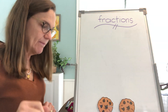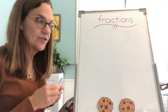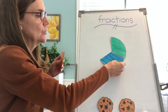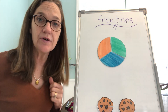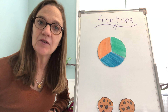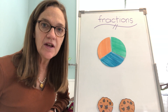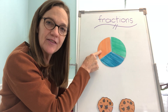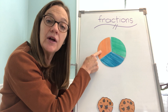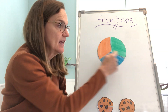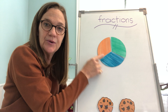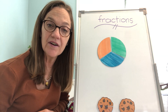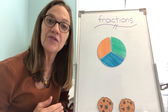Yesterday, we talked about thirds. Do you remember? One, two, three pieces — three equal pieces. That's what makes something thirds. Do you remember that we also talked about how many pieces there are in the whole? How many equal pieces helps us to know the name of the fraction. Since there are one, two, three pieces, we say that this circle has been divided into thirds. Three pieces equals thirds.